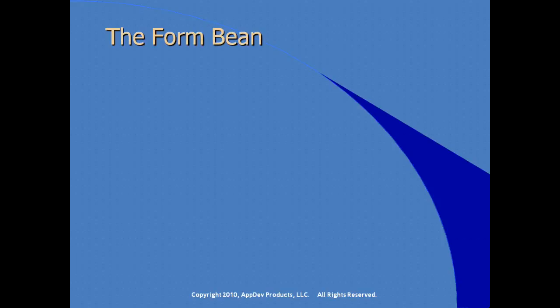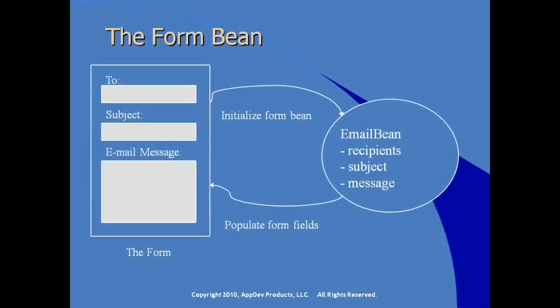Here's a diagram of what's happening on the server side. On the right-hand side, we have an instance of, say, an email bean with properties for recipient, subject, and message, with appropriate getter and setter methods. The bean is configured as a form bean associated with a particular form. When the form is rendered, the email bean instance is used to populate the fields. When the form is submitted, the values the user entered are used to populate the properties of the form bean.